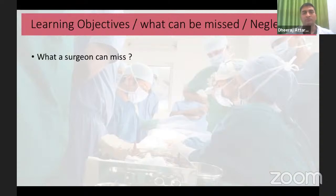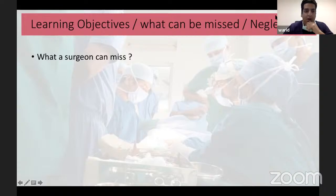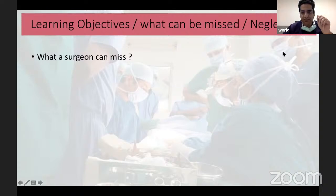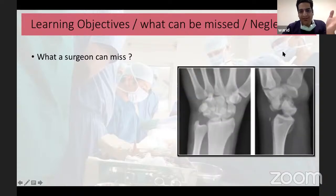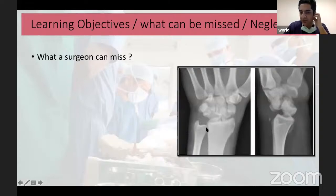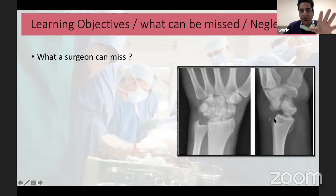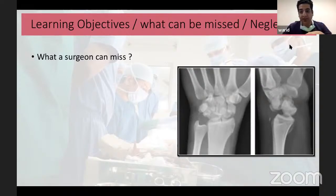The key learning objective is understanding what a surgeon can miss. For example, if you look at only an AP view of the wrist, you may see a scaphoid fracture, but if you don't look at the lateral view, you will completely miss a transcaphoid perilunate dislocation. Getting proper and adequate x-rays is very important — sometimes a surgeon misses an injury by looking at only one particular view.